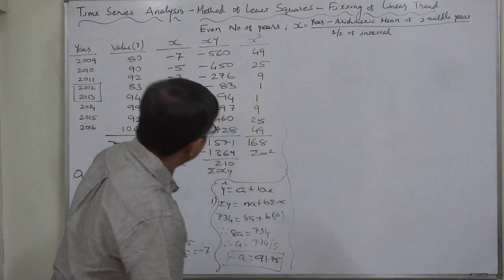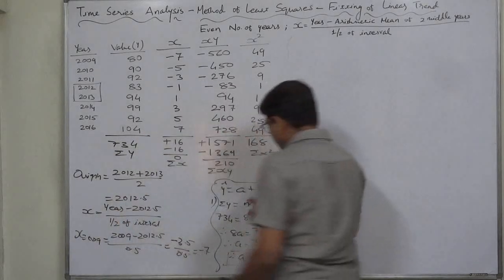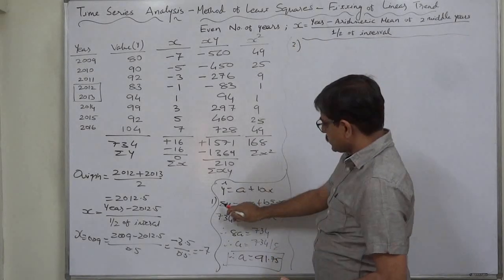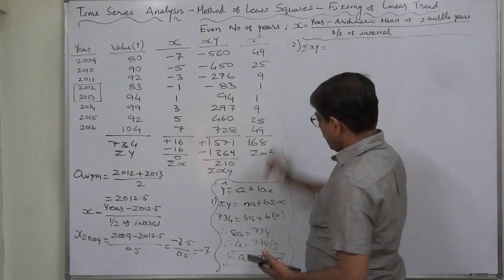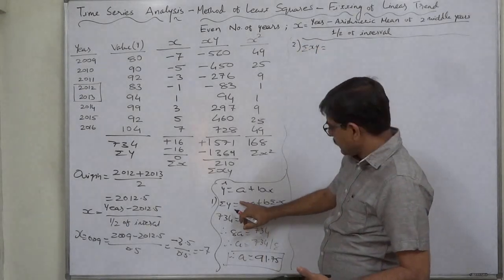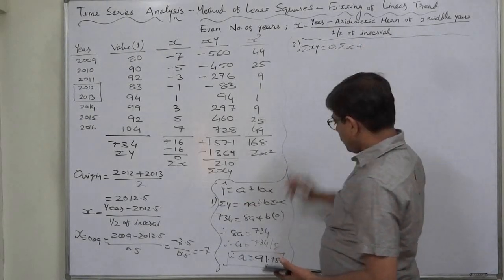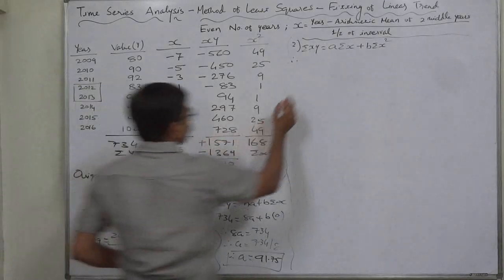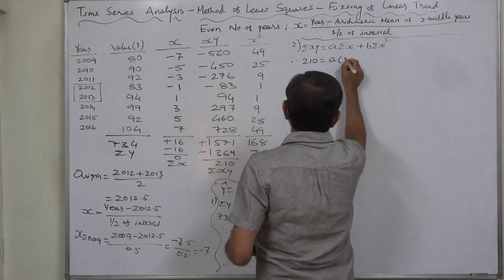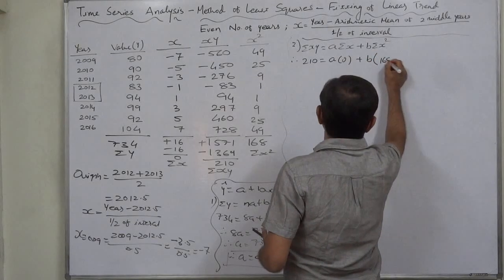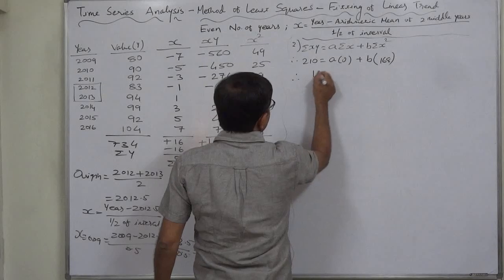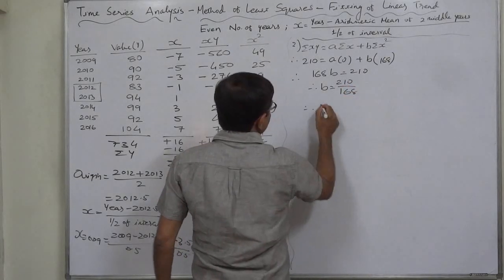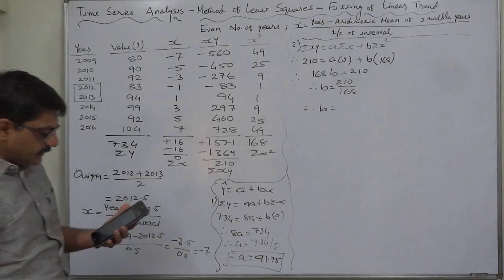Now the second equation is very simple. Multiply the first normal equation by X and we get the second normal equation. Sigma Y into X will be sigma XY. nA is actually sigma A, therefore now it will be A into sigma X plus B into sigma X square. Let's substitute the values. Sigma XY is 210, sigma X is 0, sigma X square is 168. So ultimately 168B equals 210. Therefore B equals 210 upon 168, so B is again positive and that is 1.25.